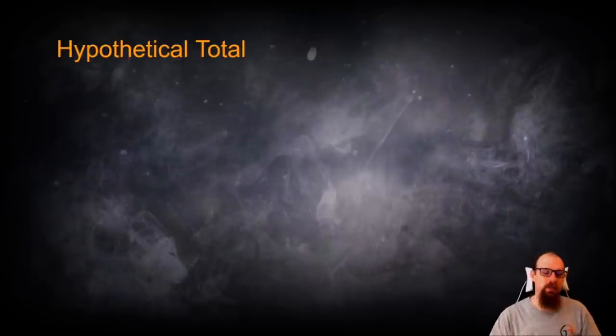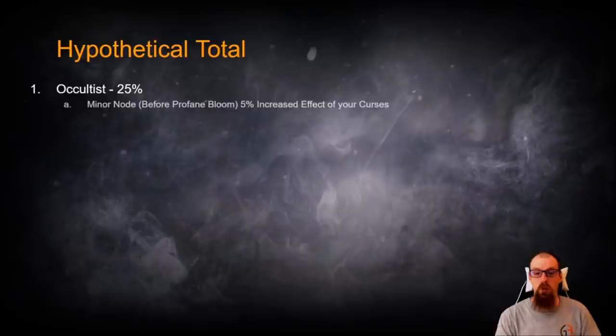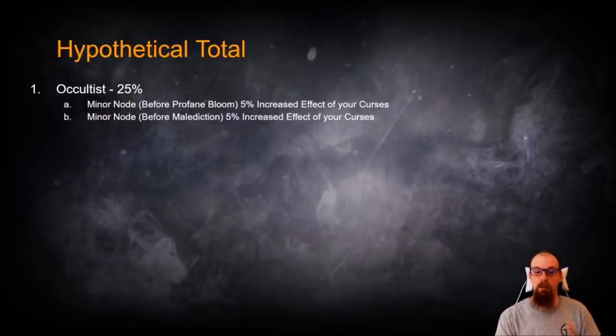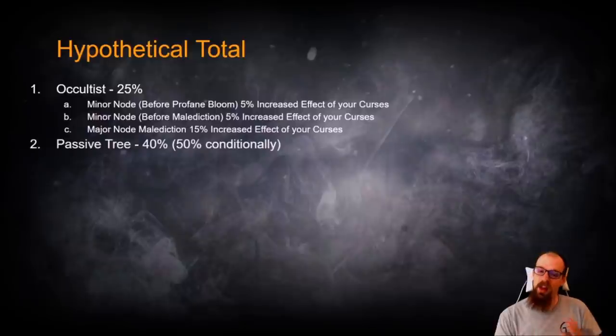So let's calculate a hypothetical total here. Let's say that we take the Occultist Ascendancy, which gives us 25% increased effect of our curses. That's from the minor node before Profane Bloom, the minor node before Malediction, and the major node, Malediction itself.